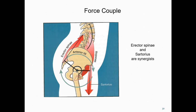Earlier we defined synergists as muscles that cooperate to produce a movement. Muscles acting in a force couple cooperate in a unique way — even though they're pulling in different directions, they both act to create internal torques that are in the same direction. Here we see that the erector spinae and the sartorius pull on the pelvis in opposite directions, yet both are working together, each creating a clockwise internal torque.